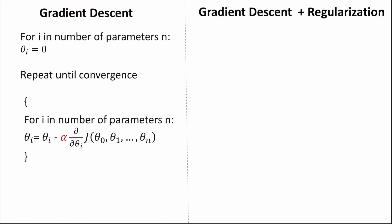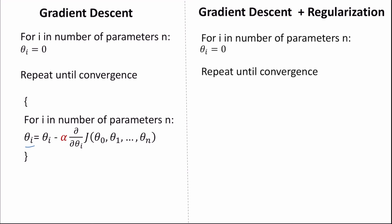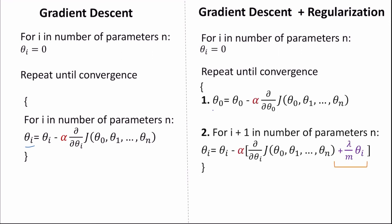Regularization reduces our parameters by making a small adjustment to the gradient descent algorithm. With ordinary gradient descent we set all parameters to 0 and repeat until convergence. With regularization we follow the same concept but keep theta 0 using the initial gradient descent algorithm, since reducing theta 0 does not impact our model's variance. For all other parameters — theta 1, theta 2, etc. — we subtract alpha times the derivative of our cost function, plus an additional regularization element which further reduces all parameters and hence reduces overall variance.